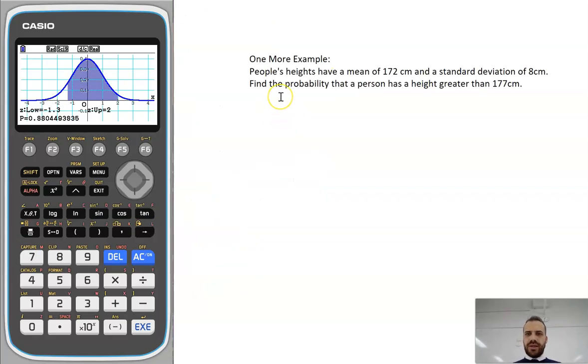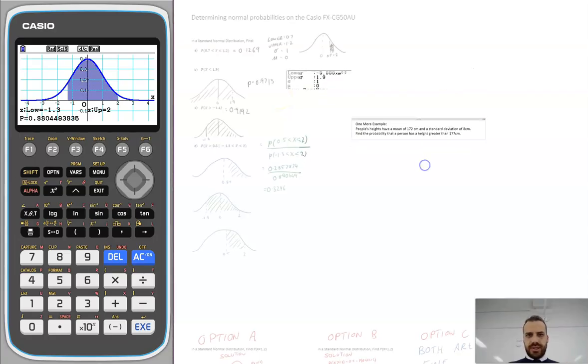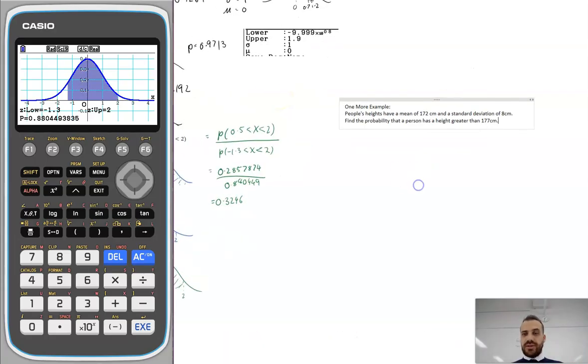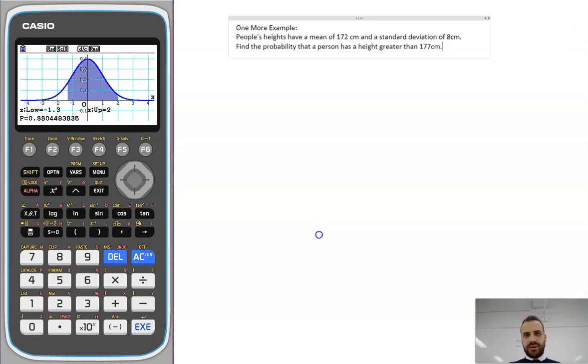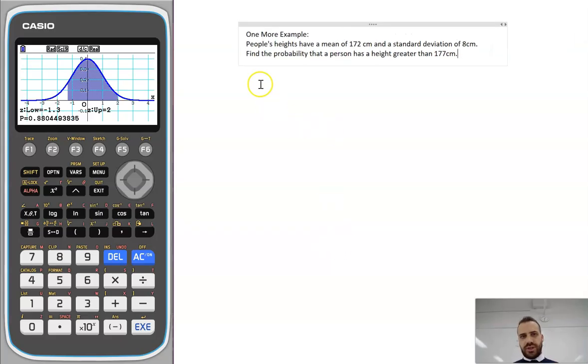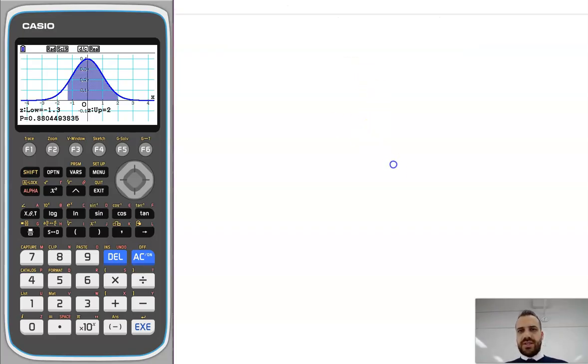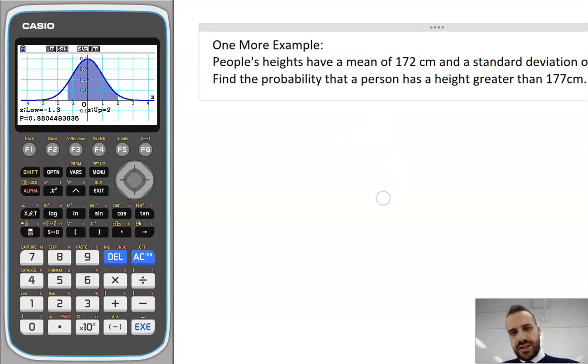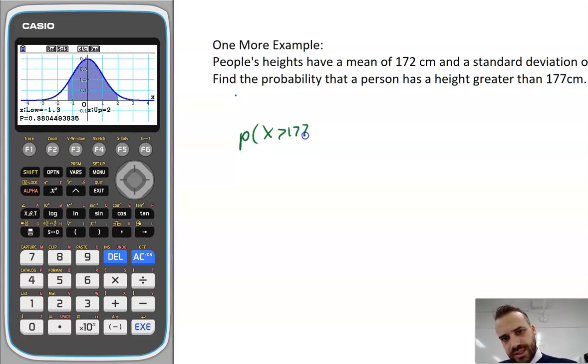One more example here. Now every other example I did in this video was a standard normal distribution, but we can do it with any distribution. People's heights have a mean of 172 and a standard deviation of 8 centimeters. Find the probability that a person has a height greater than 177. So we're trying to find the probability that X is greater than 177.